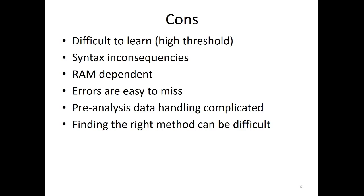The pre-analysis part of data handling is rather complicated in R. If you're performing a statistical analysis, it's usually just a single command and very simple. But to define groups, make selections, and code variables correctly is not always intuitive. Finally, it can be difficult to find the right method because there are so many packages available. For a given analysis there might be many good alternatives and possibly bad ones too. For example, there are a lot of meta-analysis packages in R and you need to choose the one best suited for your needs.